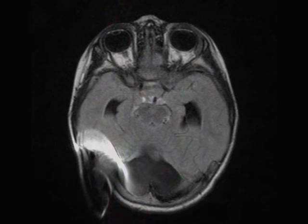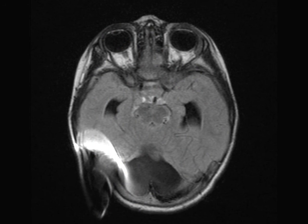There are numerous associations in both the non-syndromic and syndromic setting. Some of the CNS associations include cortical migration anomalies and dysgenesis of the corpus callosum. Non-CNS anomalies include a cleft palate, low-set ears, and cardiac anomalies.